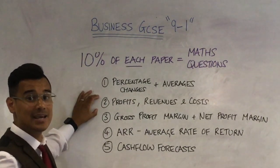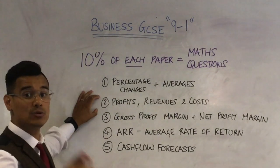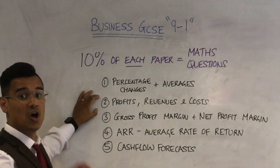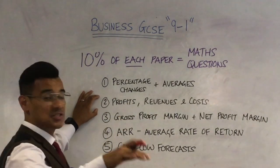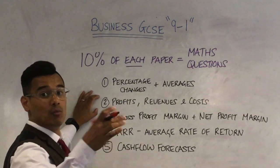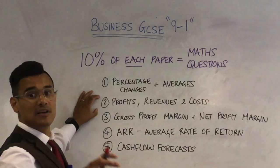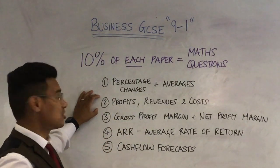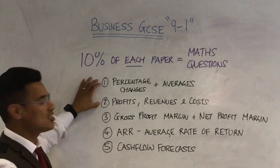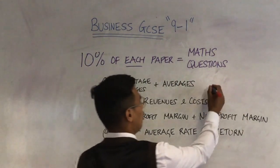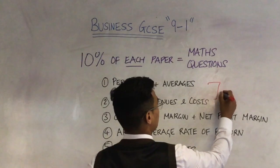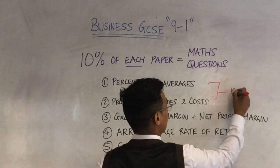Profits equals revenues minus costs. Revenues equals price times quantity sold. Costs — well, it's total costs — fixed costs plus variable costs. I suspect you'll see these questions on paper one.